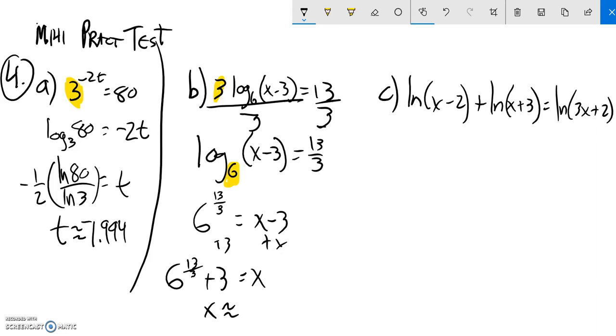Do that on my calculator. 6 to the power of, put that exponent in parentheses, close off the parentheses, add 3. 2357.988. There's that answer.